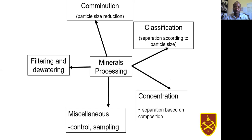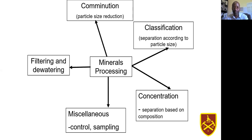The unit operations in mineral processing include comminution, which is size reduction; sizing, which forms the classification and screening operations; and then separation, which is the concentration. Then you have dewatering to regulate the amount of water in various streams in the plant. Lastly, we have miscellaneous operations, which could include sampling as part of your metallurgical accounting. All those units make up our mineral processing.